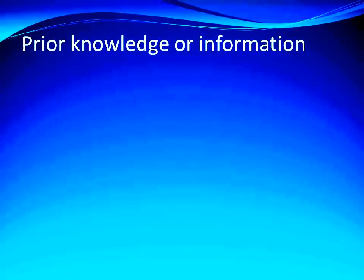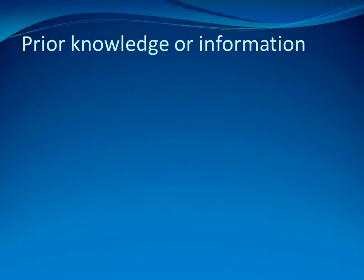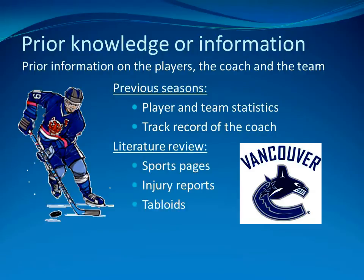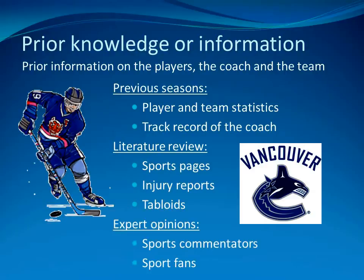So what constitutes prior knowledge or information? Prior knowledge on the players, the coach, and the team can come from many different sources. You can have information on how the players and the team have been performing in previous seasons or during the regular season before the playoffs, and you can find out the track record of the coach. You can look into the sports literature, consult the sports pages, or look up injury reports. You might even want to consult the tabloids, as players who spent the night before an important game brawling in bars might not be playing to the best of their ability. Or you might want to consult experts such as sports commentators or fans who may have insider information. However, when relying on expert knowledge, be sure to evaluate the reliability and quality of that information.